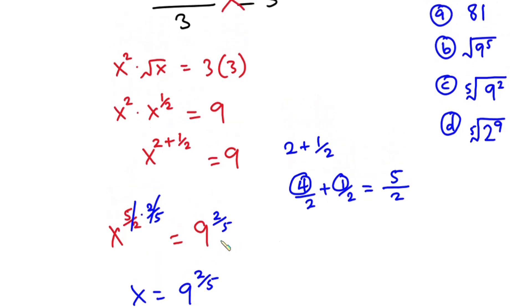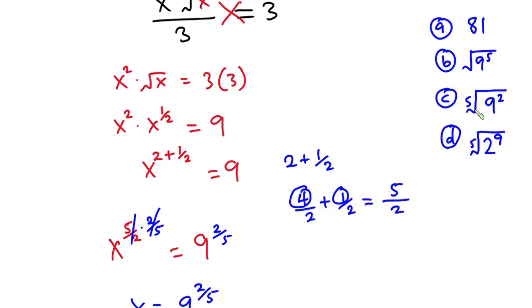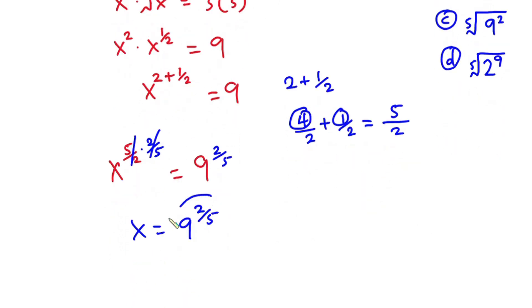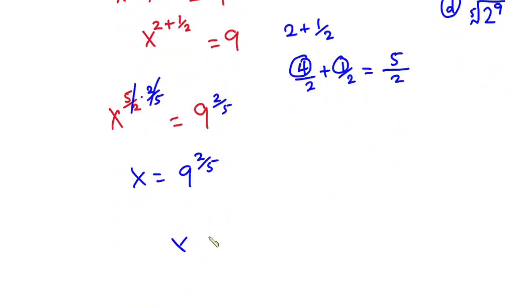Now if you look at the options, there's no 9^(2/5), so we need to break this down. x = 9^(2/5) is the same as 9^(1/5) to the power 2.